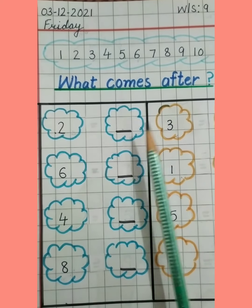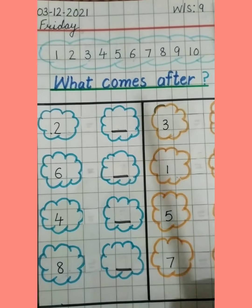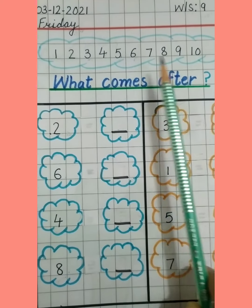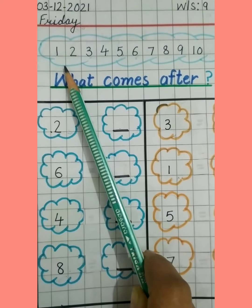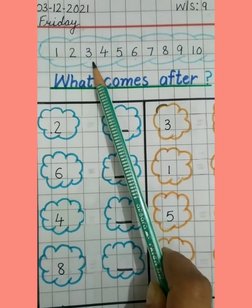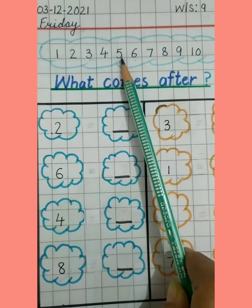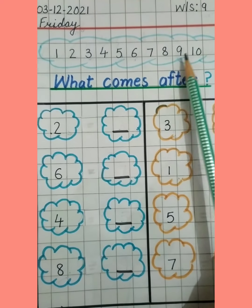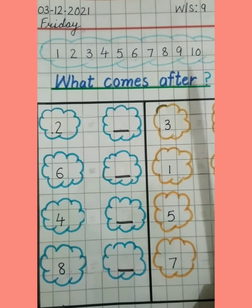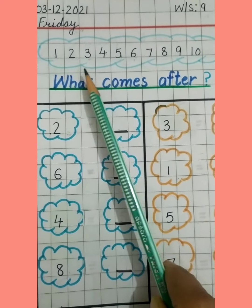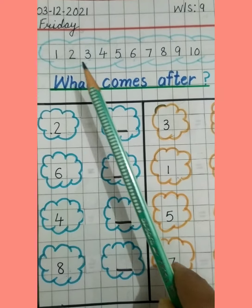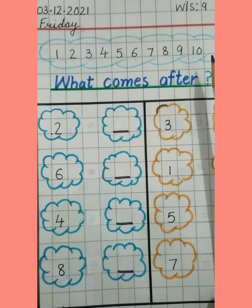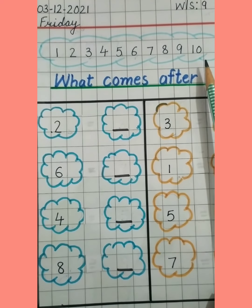Okay children, here we have written 1 to 10 numbers: 1, 2, 3, 4, 5, 6, 7, 8, 9, and 10. So aap after number likhne ke liye, is number line ki bhi help le sakte ho — you can use this number line to find the after number.